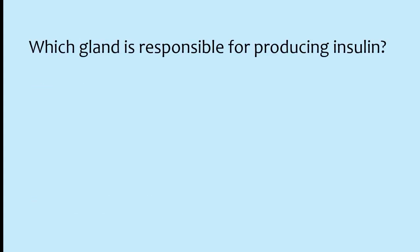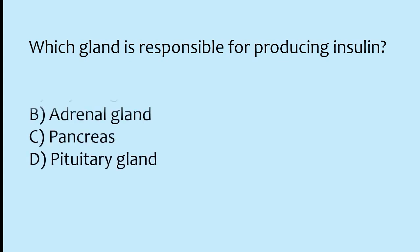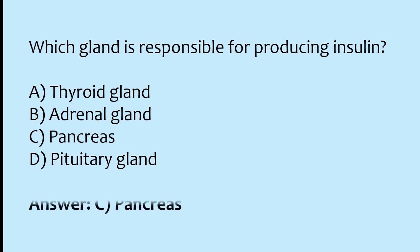Which gland is responsible for producing insulin? Options: thyroid gland, adrenal gland, pancreas, pituitary gland. The correct answer is option C: the pancreas gland is responsible for producing insulin.